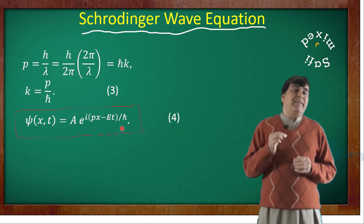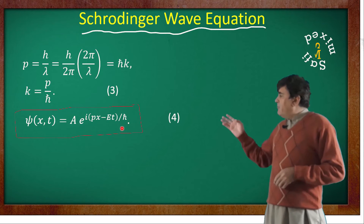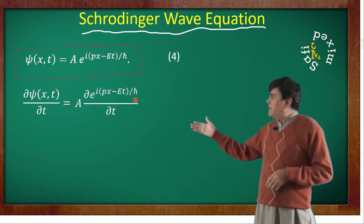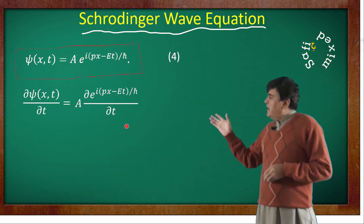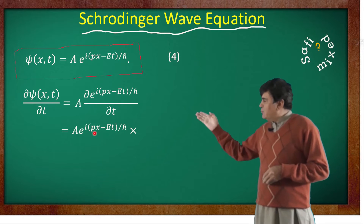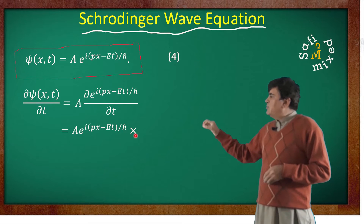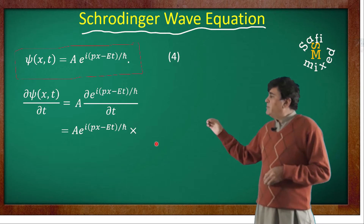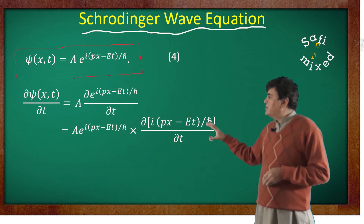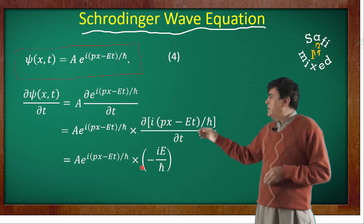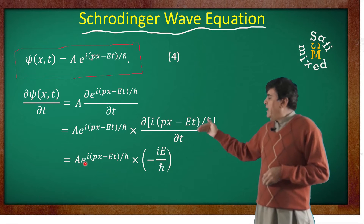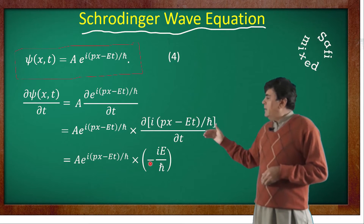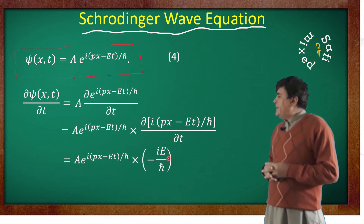Let us see how we can extract this information from the wave function. First, let us differentiate equation 4 with respect to time. The partial derivative of psi with respect to t equals A times the partial derivative of the exponent with respect to t. Since the first part of the argument is time-independent, differentiating gives: partial psi over partial t equals A times exponent of iota(pX minus Et)/h-bar, multiplied by minus iota E divided by h-bar.